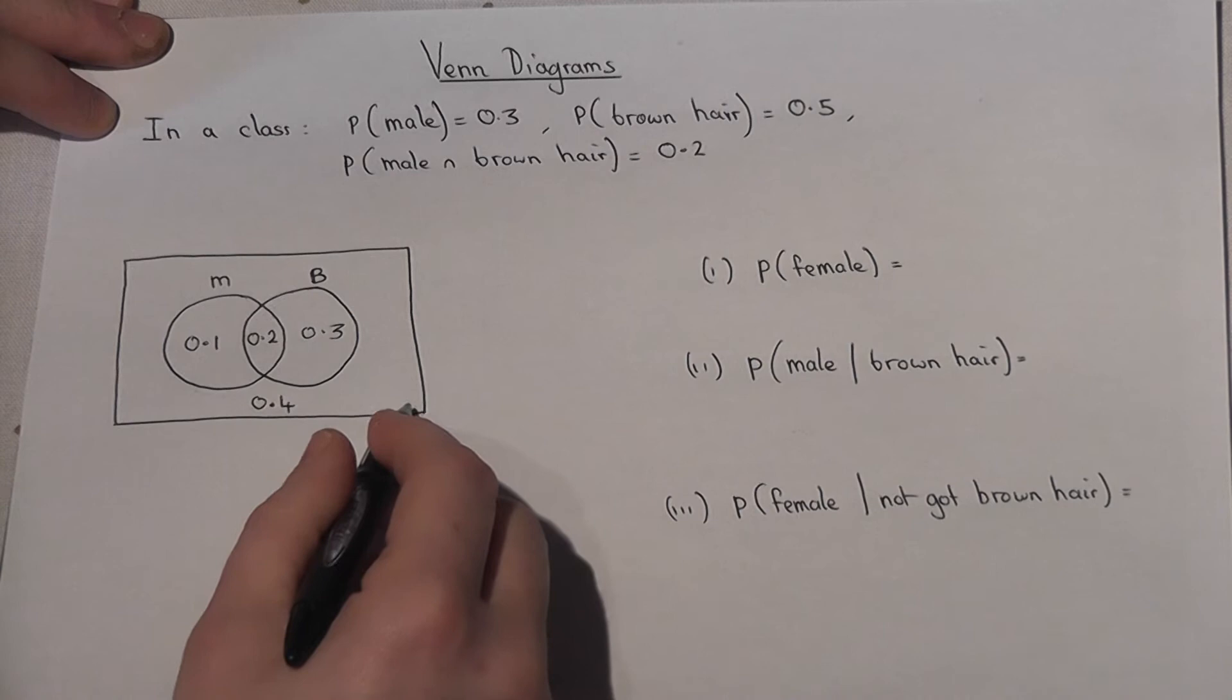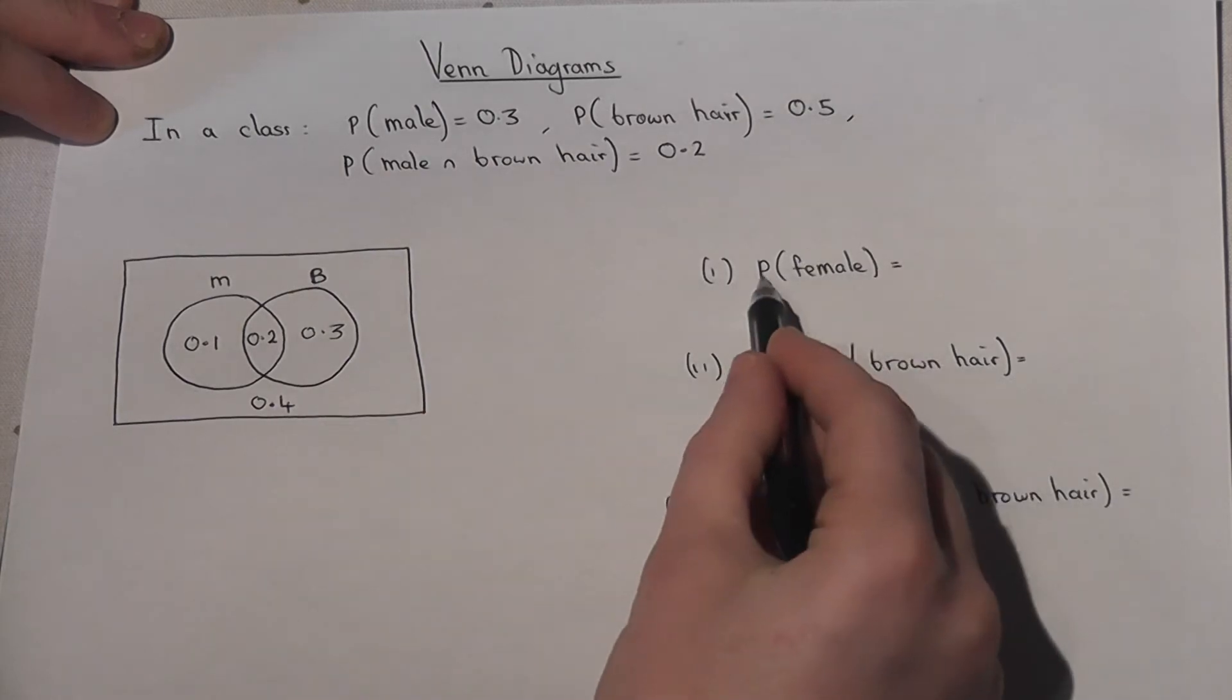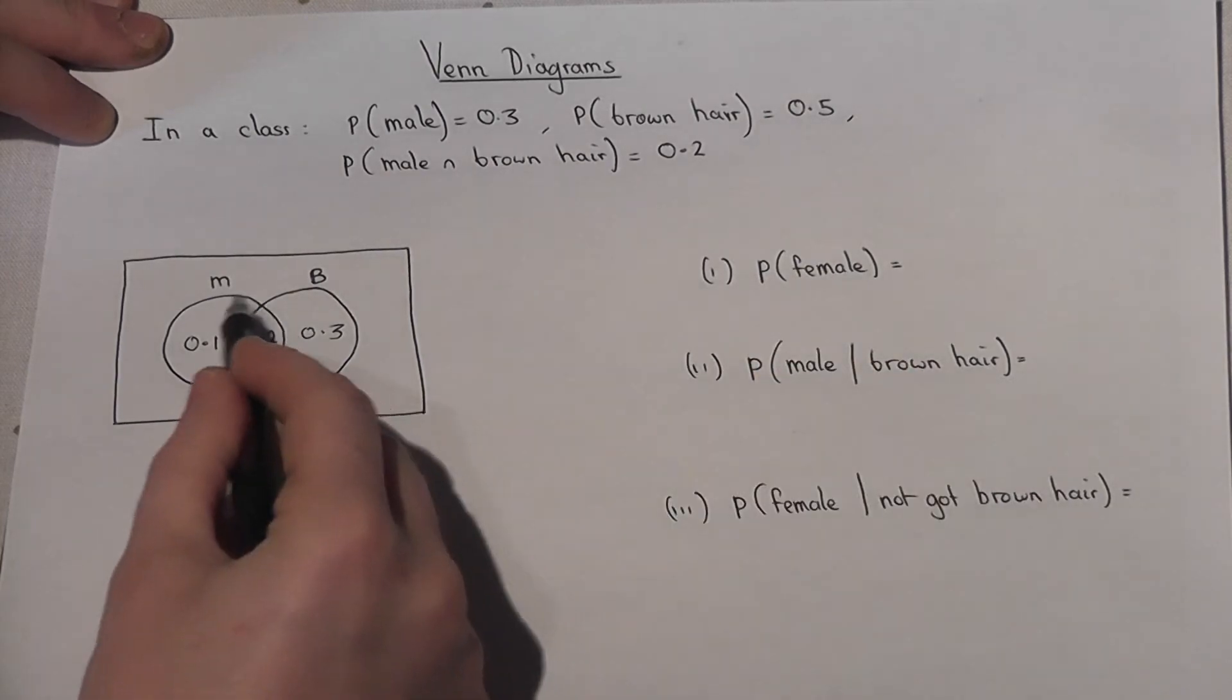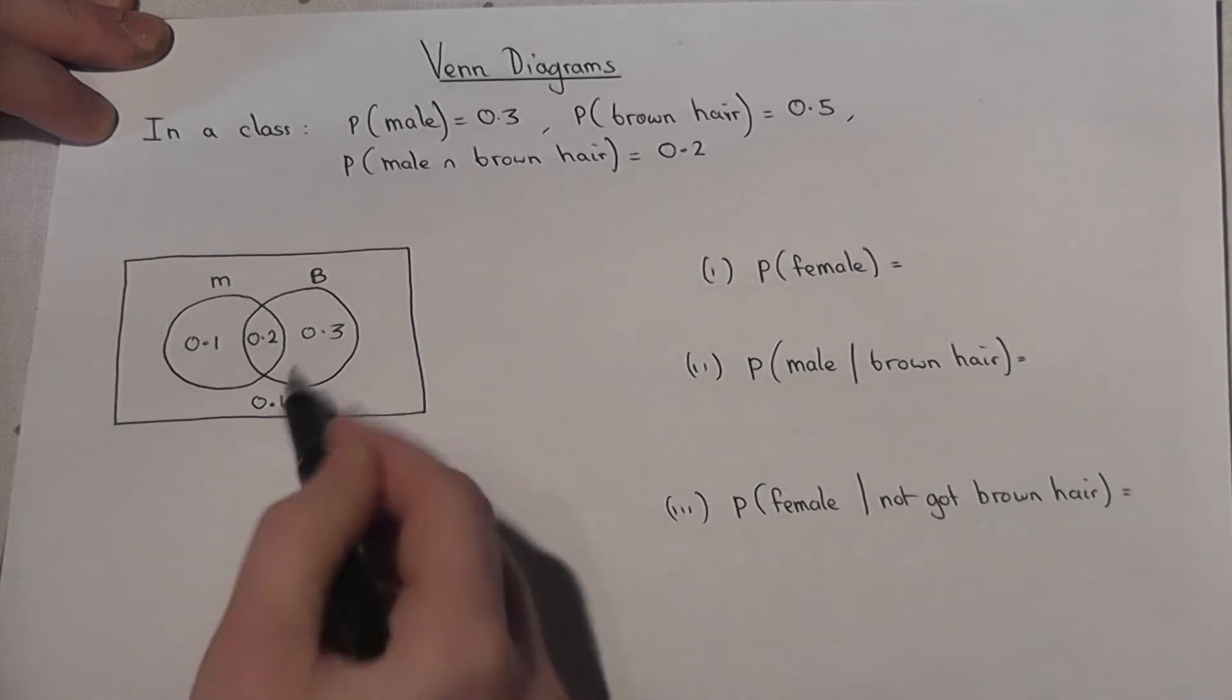Now this represents males and females, brown hair and not brown hair. Because the chance of being female is anything not inside the male circle, which are these two numbers here, so the chance of being female is 0.7.